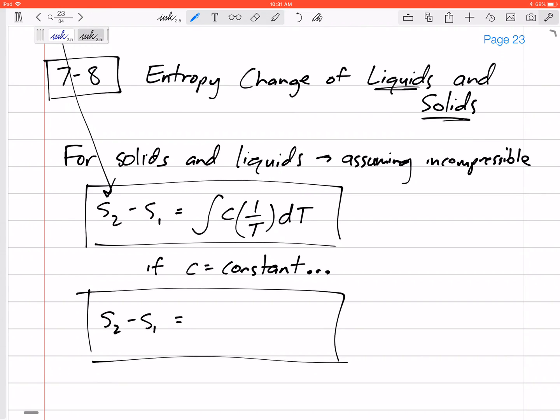And so DS is equal to DU over T. And substituting for specific heats and taking the integral of both sides, S2 minus S1 is equal to the integral of C 1 over T DT. And if C is constant, we can take this out of the equation and we can get C at some constant or average temperature.